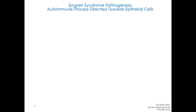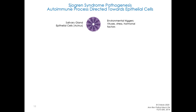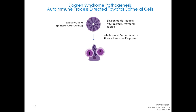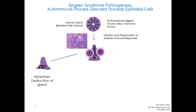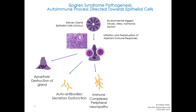Here I have a drawing of a salivary gland acinus. When there are environmental triggers such as viruses, stress, or hormonal factors, you can get initiation and perpetuation of aberrant immune responses — shown here as a T cell and a B cell on top of the salivary gland cell. These reactions will cause apoptosis and destruction of the gland. You can get autoantibodies which cause secretory dysfunction, and immune complexes which will cause peripheral neuropathy. In the serum, you can have Ro and La antibodies, which are disease markers.